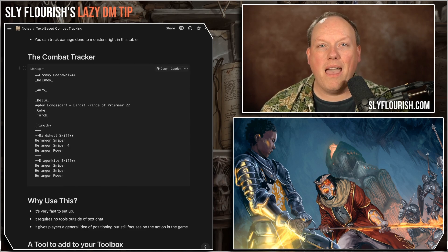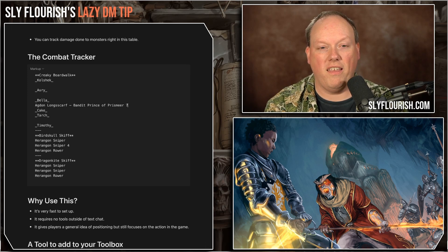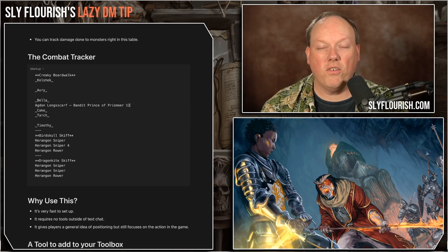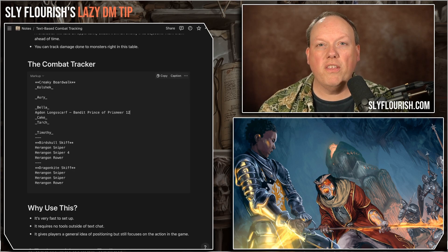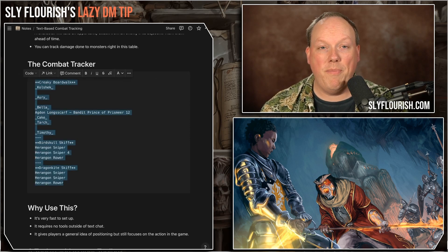One cool trick is we can track damage done to monsters or NPCs directly in the same list, just by adding text next to their name with the number. So if Agdon Longscarf takes a longsword attack for seven damage, then gets hit with a firebolt for another five, we just add it up. Even as we continuously paste the combat tracker into Discord, players can see how much damage that monster has taken. This is information available to players anyway, and it's an advantage of tracking damage up rather than hit points down.